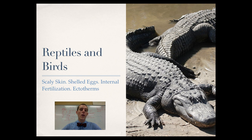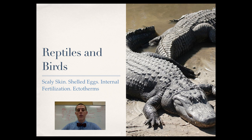The most basic amniotes are our reptiles and birds, grouped together though obviously different. In these organisms we see scaly skin, shelled eggs which are good for laying on land because they are protected and don't dry out, internal fertilization, and they are ectotherms — cold-blooded.